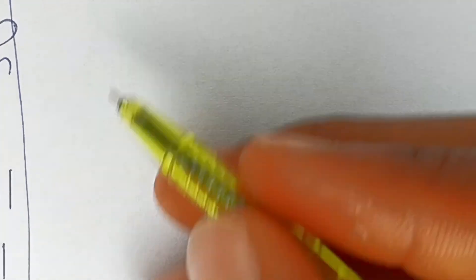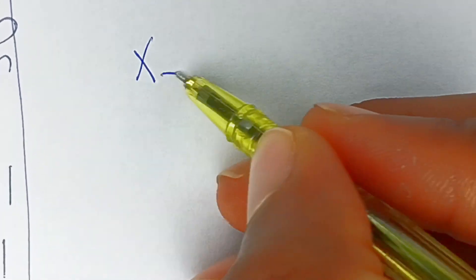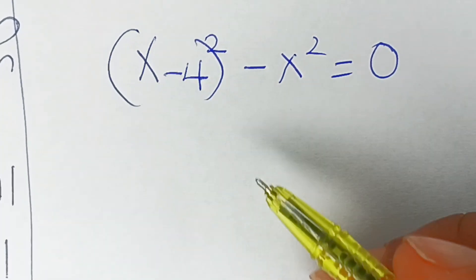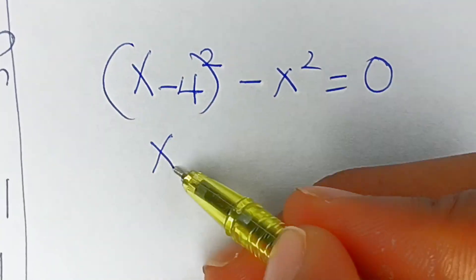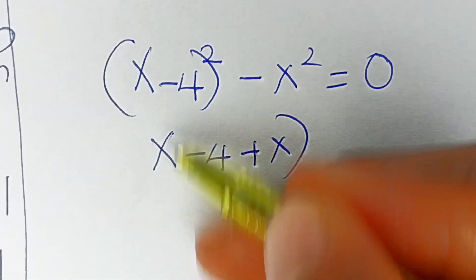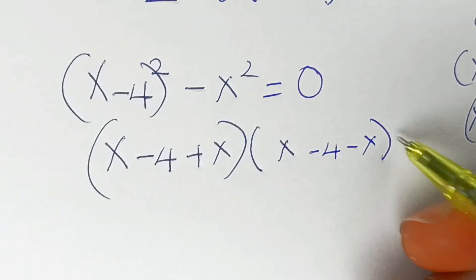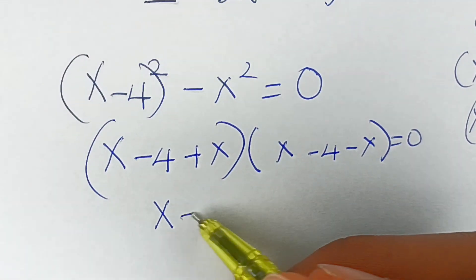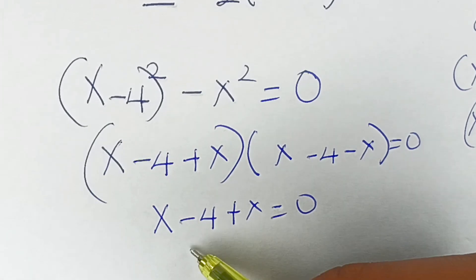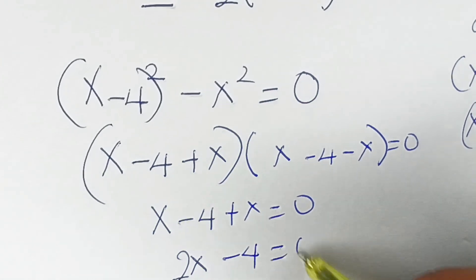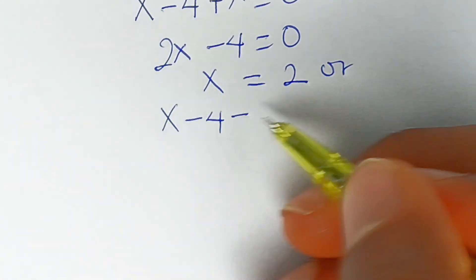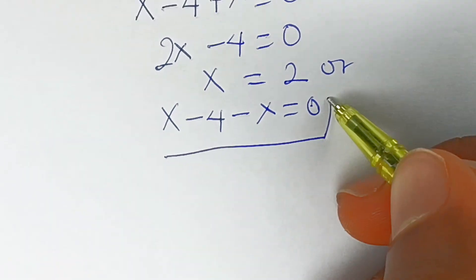Now for the second part: (x minus 4) squared minus x squared equals 0. This is a difference of two squares, so we write (x minus 4 plus x)(x minus 4 minus x) equals 0. From the first factor, 2x minus 4 equals 0, giving x equals 2. The second factor, negative 4 equals 0, gives no solution.